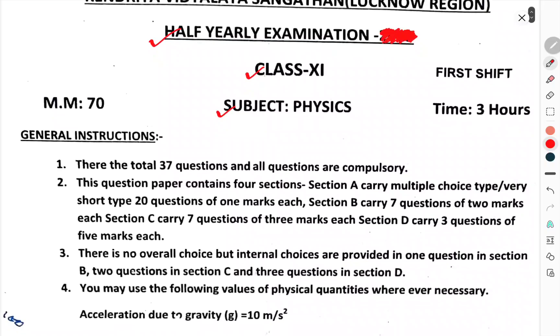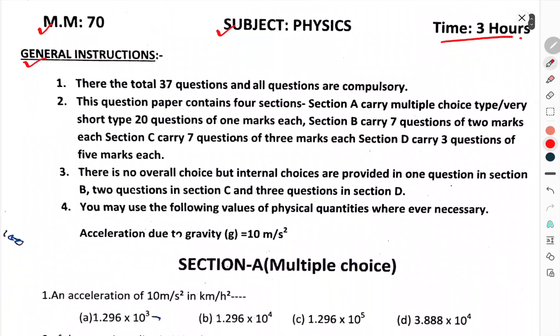First of all, maximum marks 70, time allowed 3 hours, general instructions. Total there are 37 questions, all questions are compulsory. This question paper contains 4 sections.